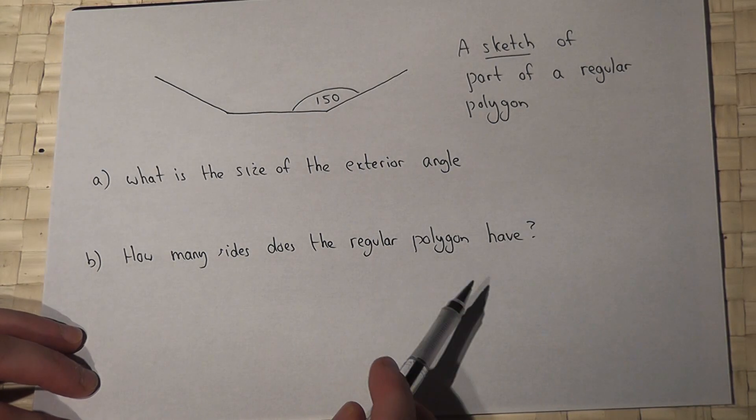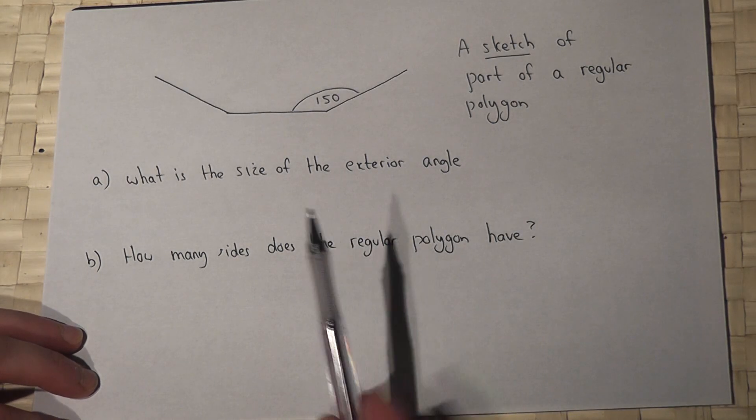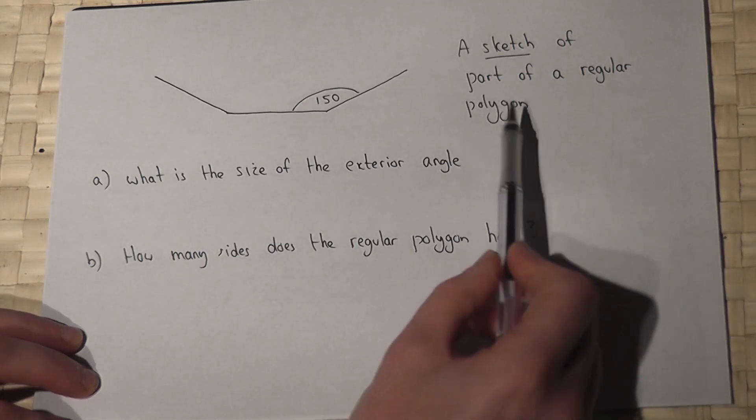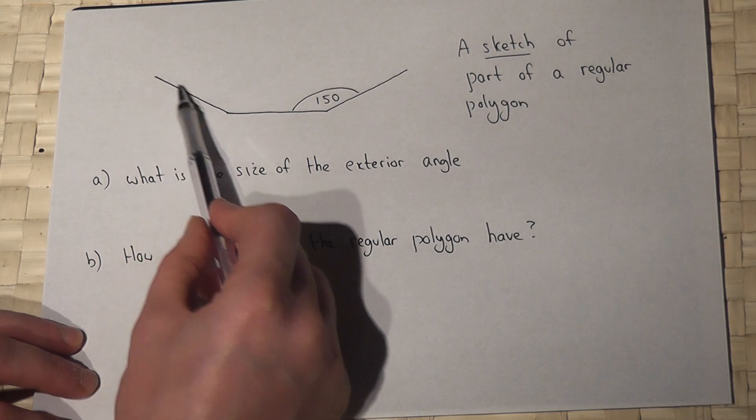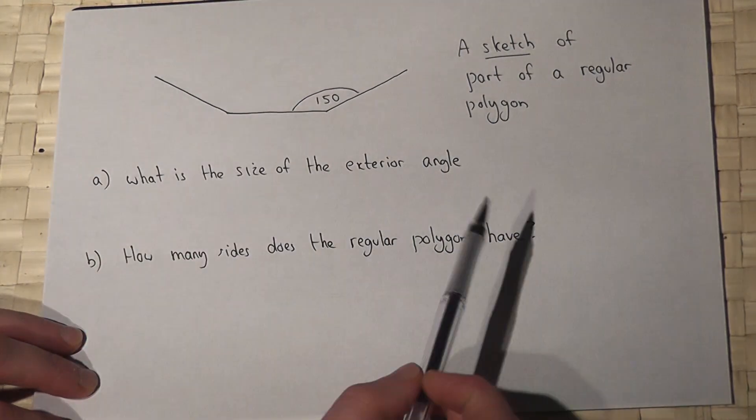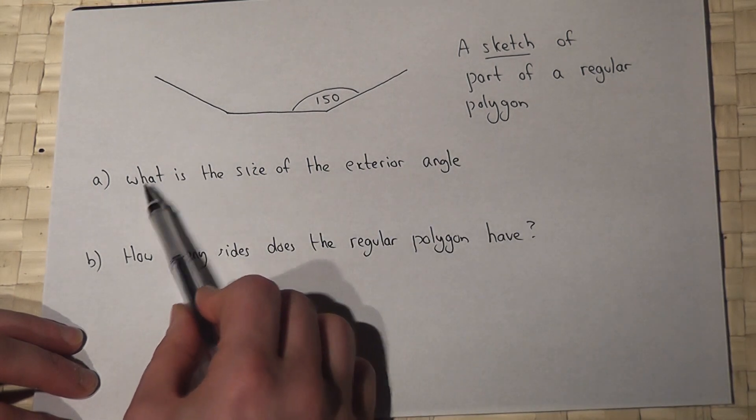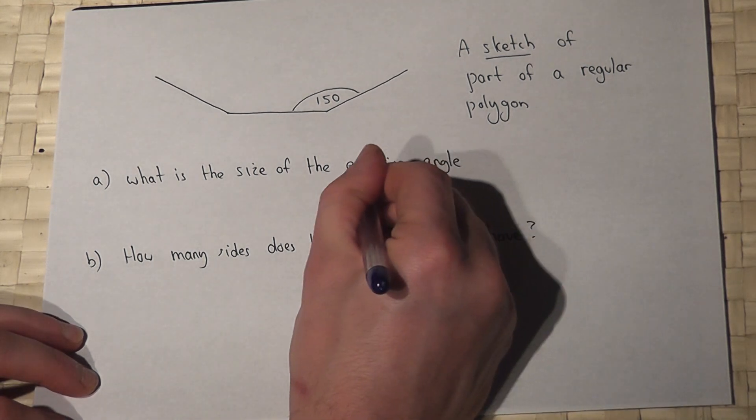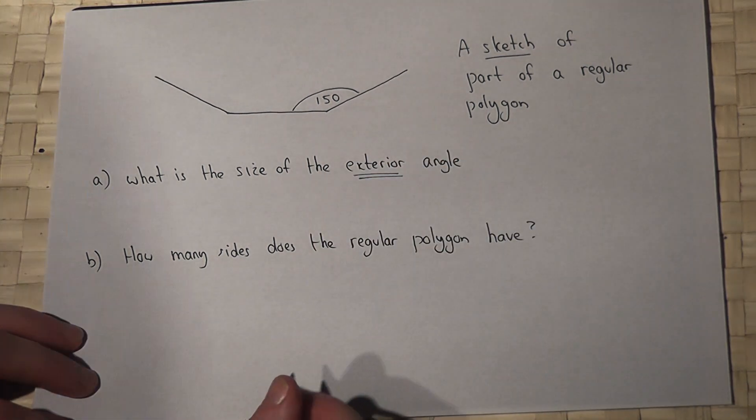This problem reviews exterior angles of polygons. We're given a sketch of part of a regular polygon. This shape continues on and goes around to create a full polygon. The question asks what is the size of the exterior angle. This is the key term and it's defined in quite a simple way.